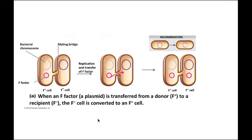The third mechanism is conjugation — two cells come together physically and exchange information, often in the form of plasmids. One cell and another merge through mating bridges. F factors, or fertility plasmids, transfer themselves into the new host. Importantly, the donor doesn't lose the plasmid; it shares the information through a rolling replication process, so the recipient gains a copy while the donor retains its own.